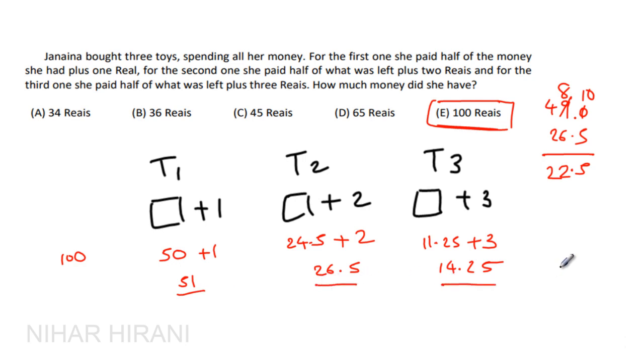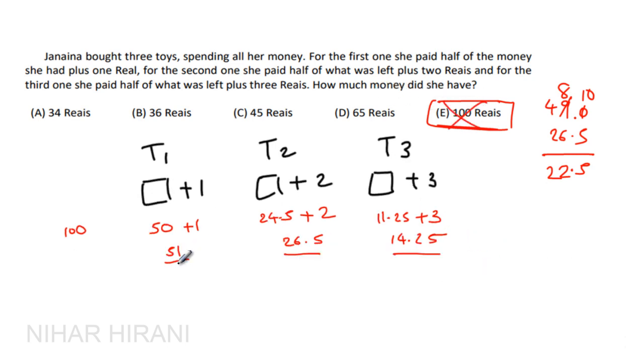She still has some money leftover and the question says she doesn't have any money at the end. This means this is not the correct answer. Now let's go with choice A.